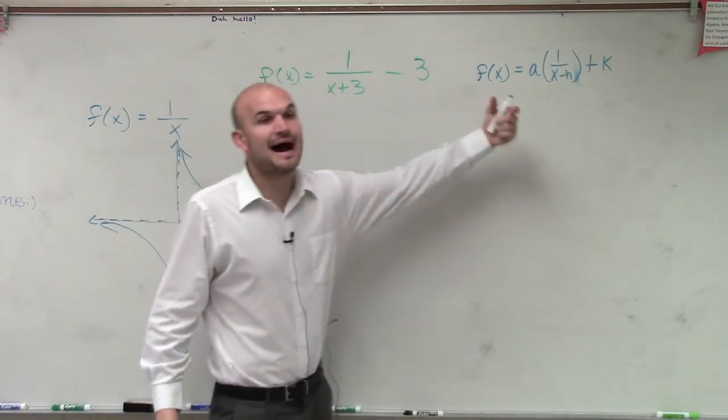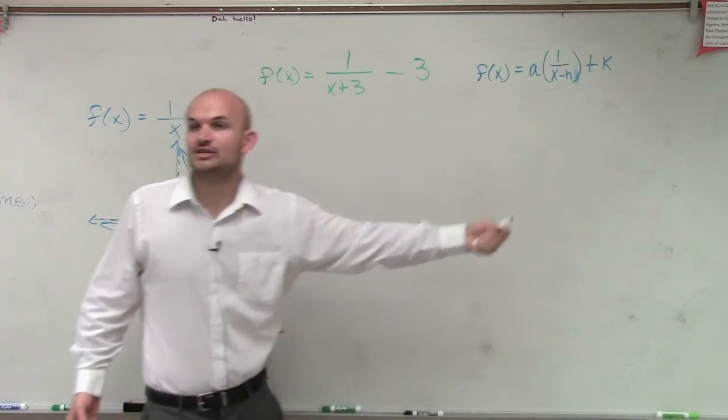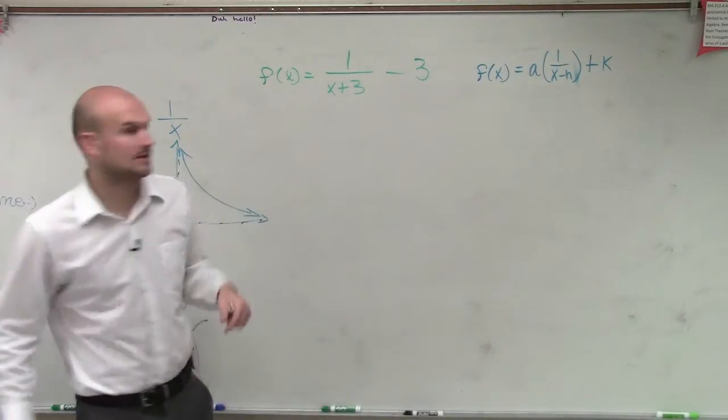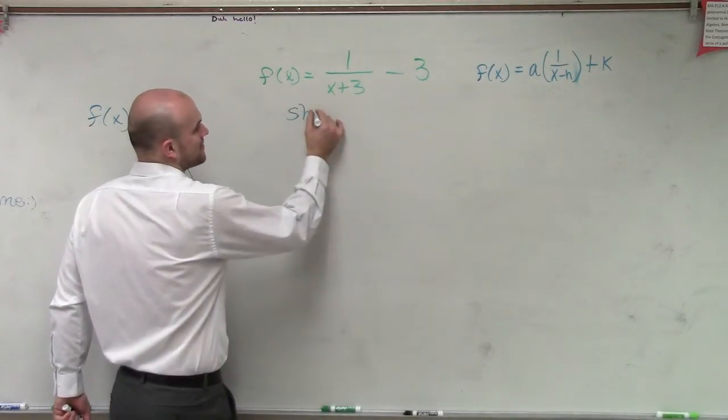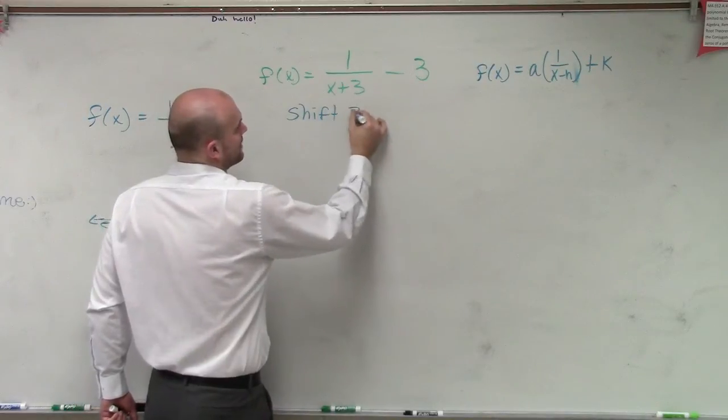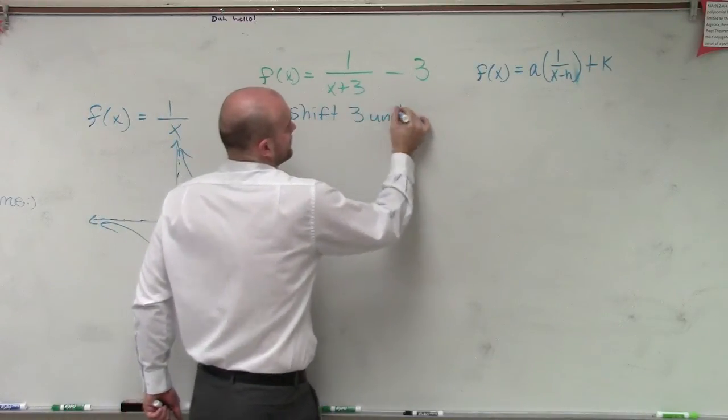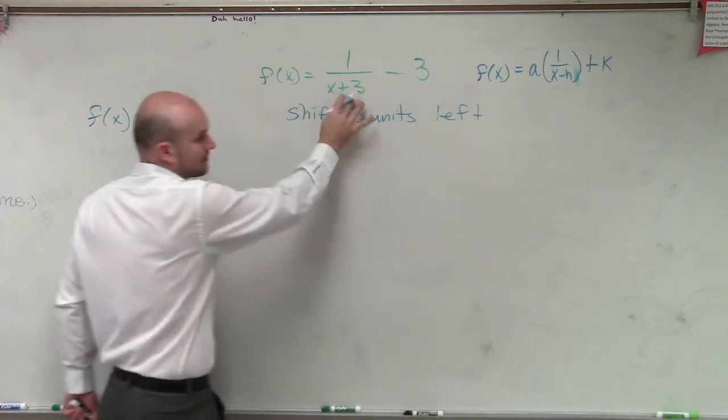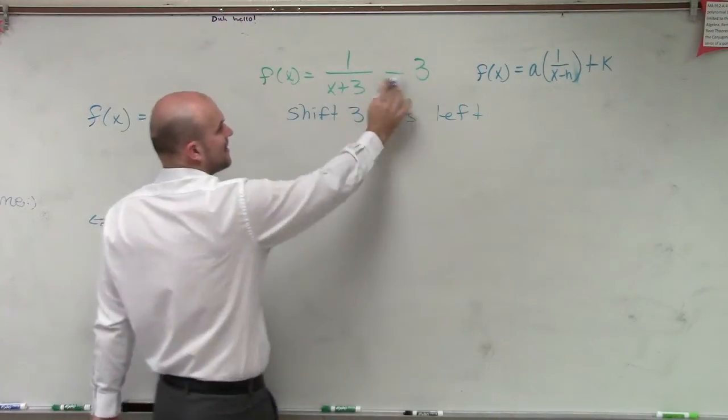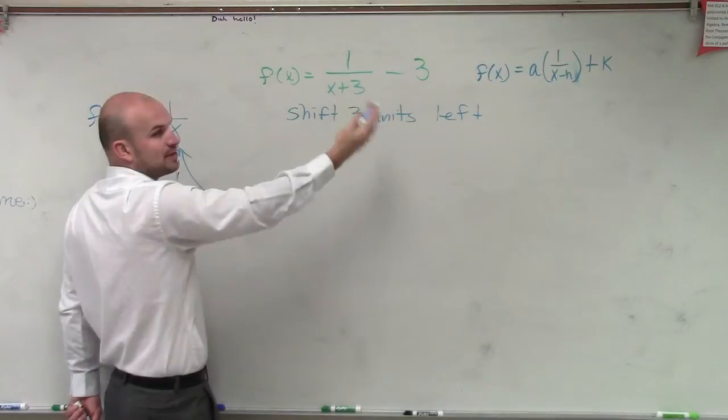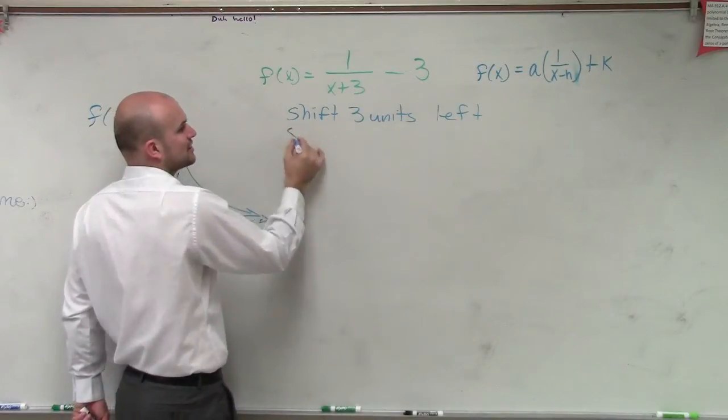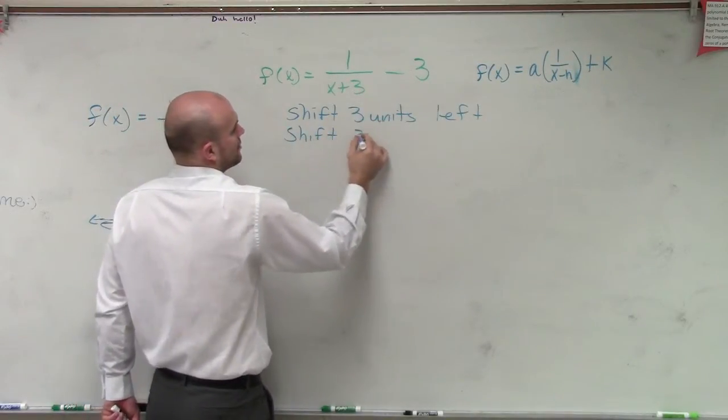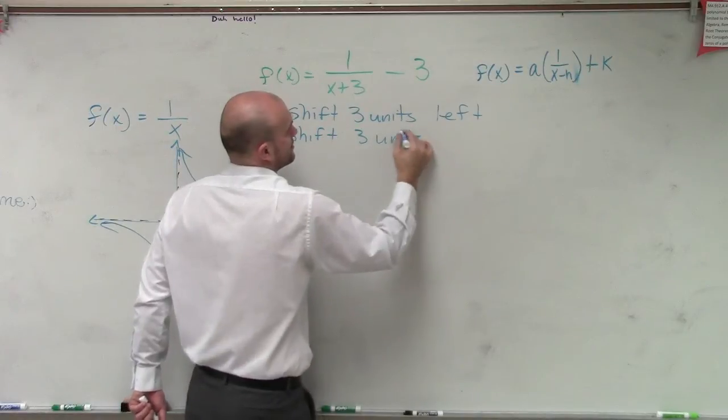So am I going to shift left or right? Remember, it's always x opposite of h. So you're going to want to shift in the opposite direction. So I'm actually going to shift 3 units left. And then minus 3, it's plus k. So when k is negative, then you're going to shift 3 units down.